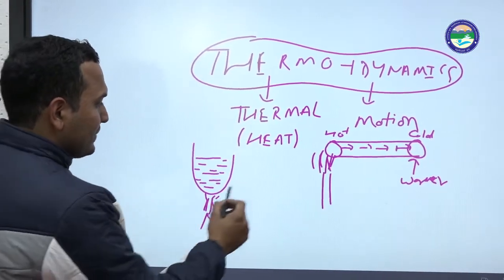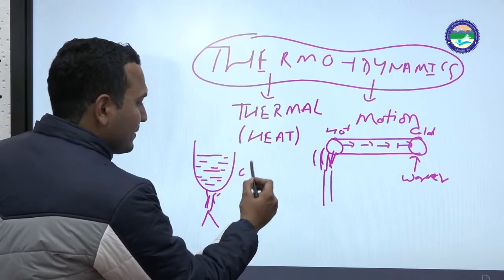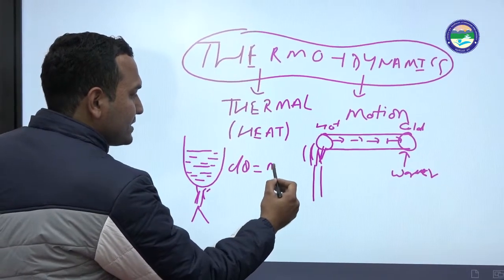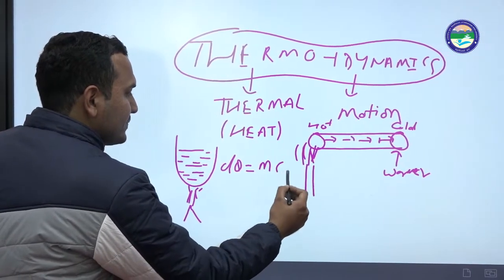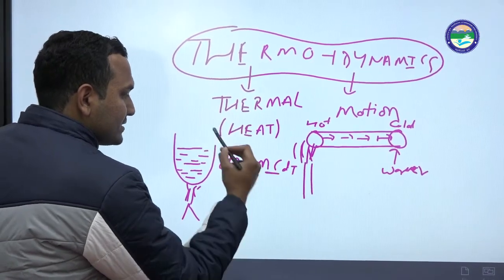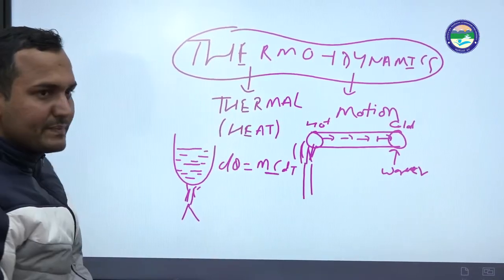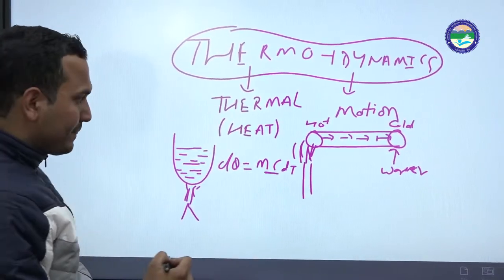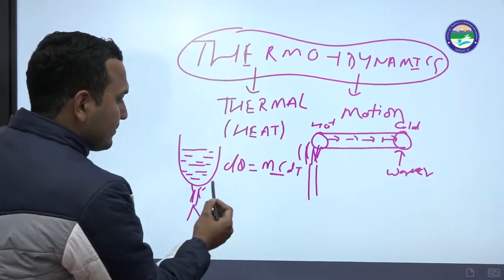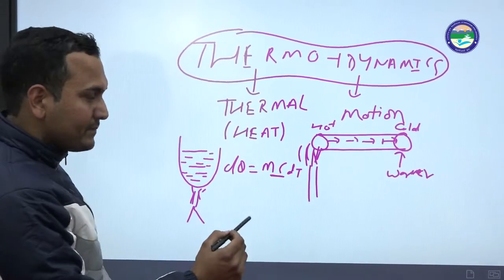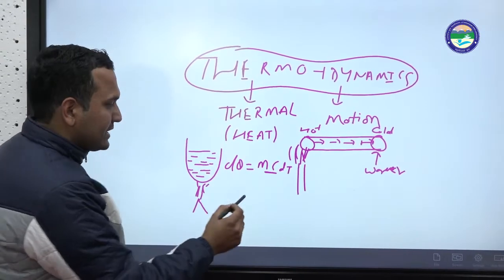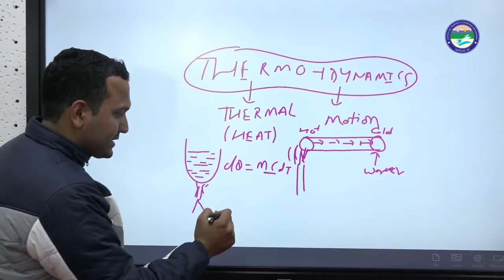For example, we will discuss a formula: dQ = mc dT. Here, c is called specific heat. Specific heat describes a property of the medium.